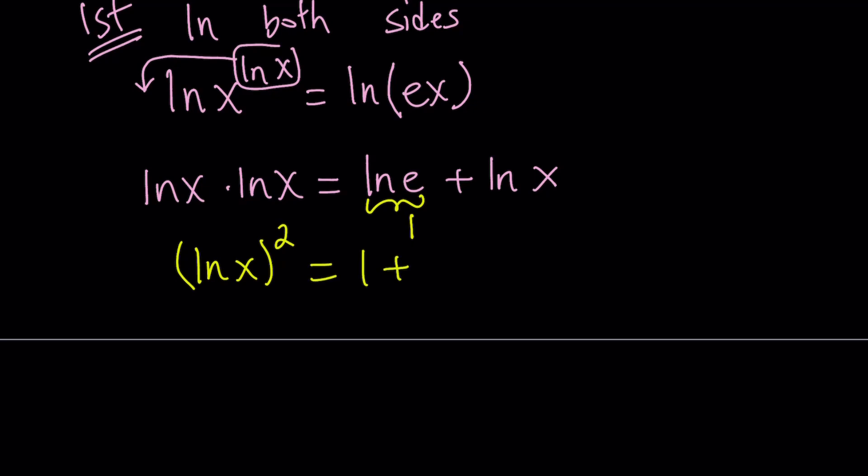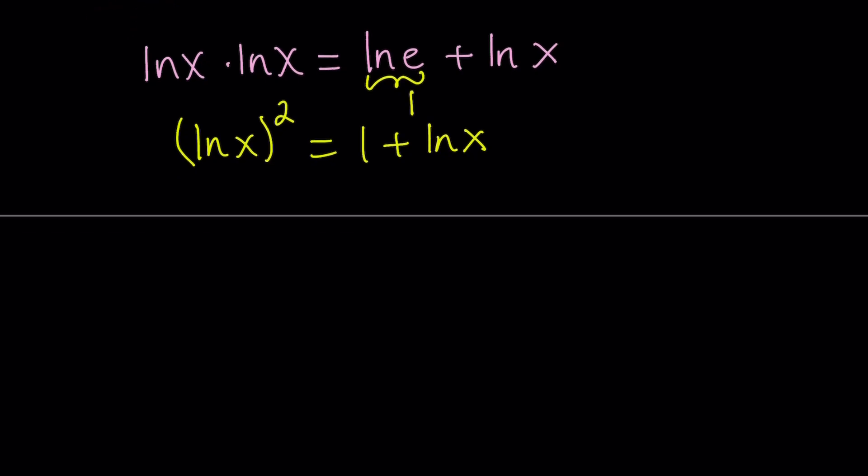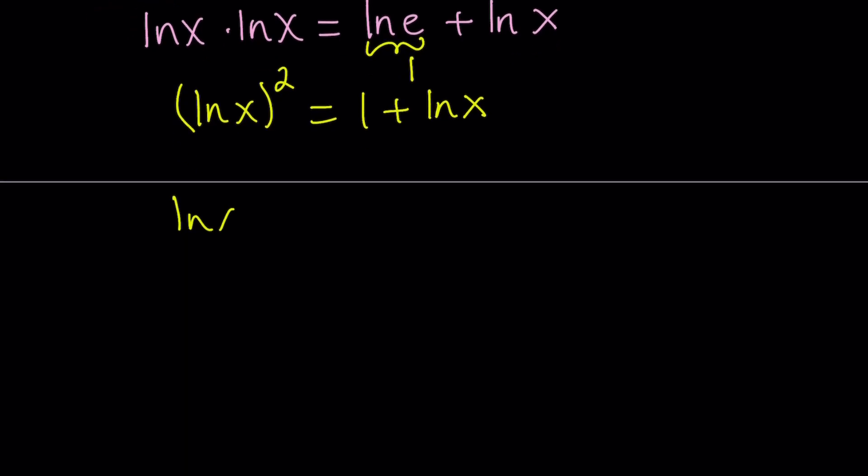So this gives us the following equation, which can actually be turned into a quadratic. So let's go ahead and write it this way. ln x squared minus ln x minus 1 equals 0. Do you smell the golden ratio? You should.